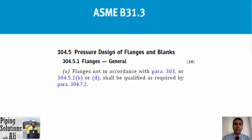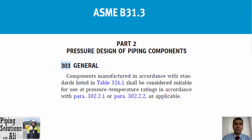Referring to paragraph 304.5.1 of ASME B31.3, flanges general: a flange not in accordance with paragraph 303 or 304.5.1(b) or (d) shall be qualified as required by paragraph 304.7.2. This clause means that if a flange is in accordance with paragraph 303 or 304.5.1(b) or (d), there is no need to check the requirements of paragraph 304.7.2.